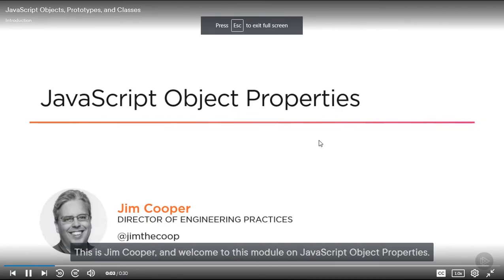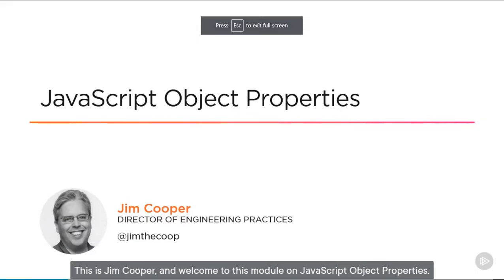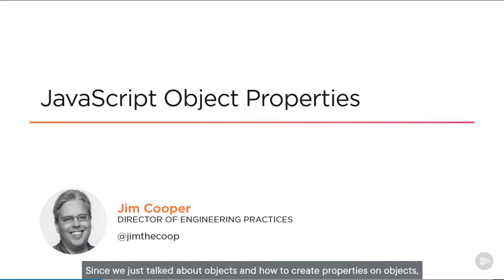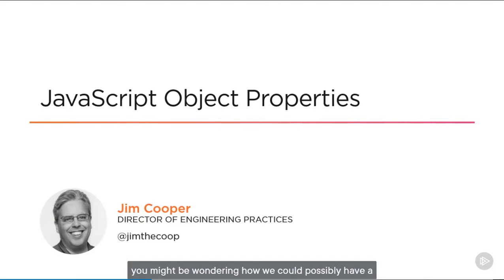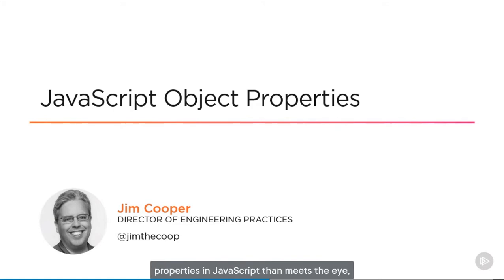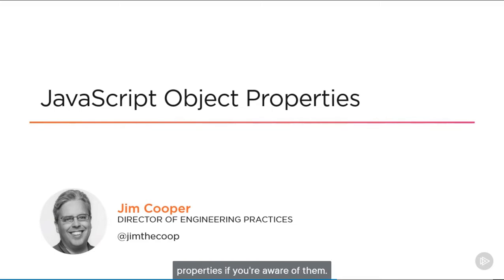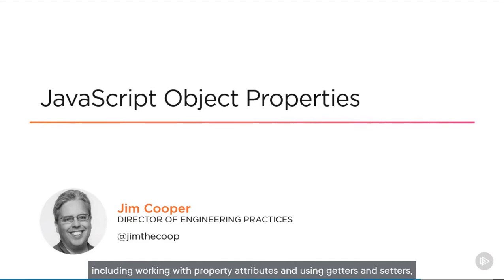This is Jim Cooper, and welcome to this module on JavaScript Object Properties. Since we just talked about objects and how to create properties on objects, you might be wondering how we could possibly have a whole module dedicated to properties. But it turns out there really is a lot more to properties in JavaScript than meets the eye, and there are some pretty cool things you can do with properties if you're aware of them. You'll learn how to do some advanced work with properties, including working with property attributes and using getters and setters.